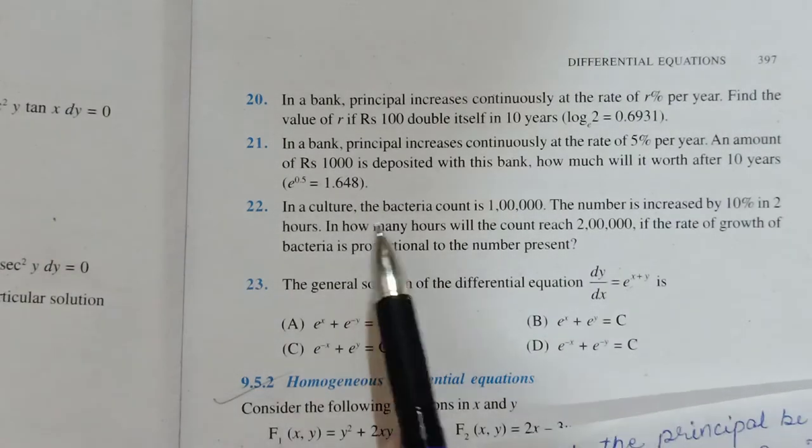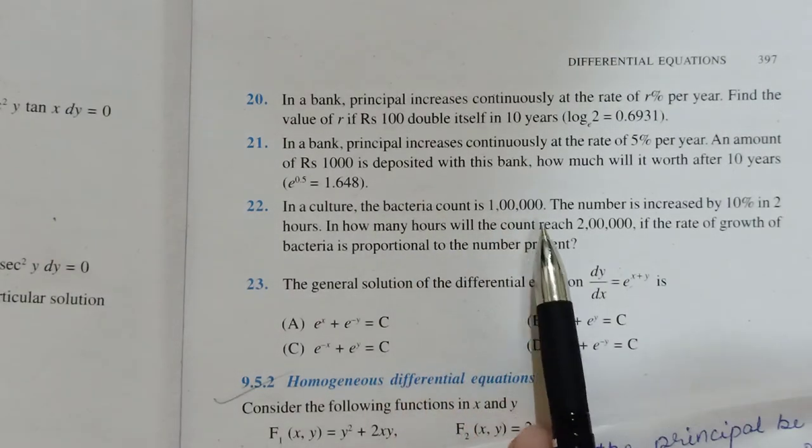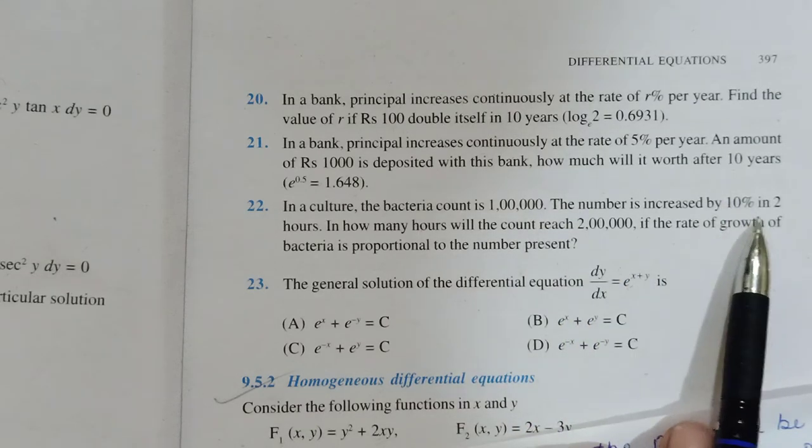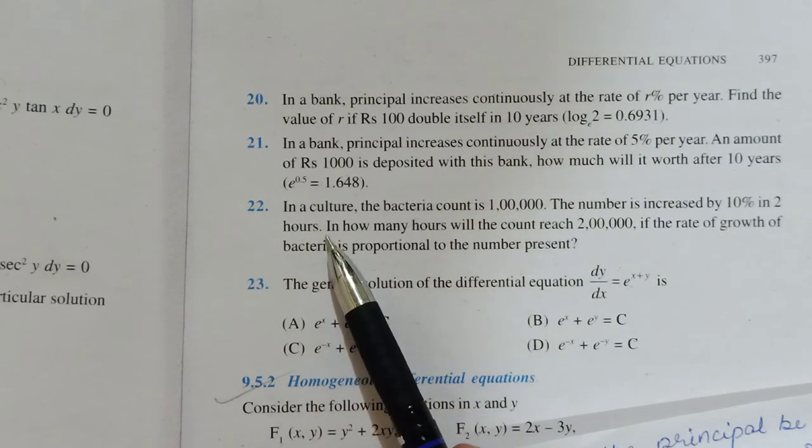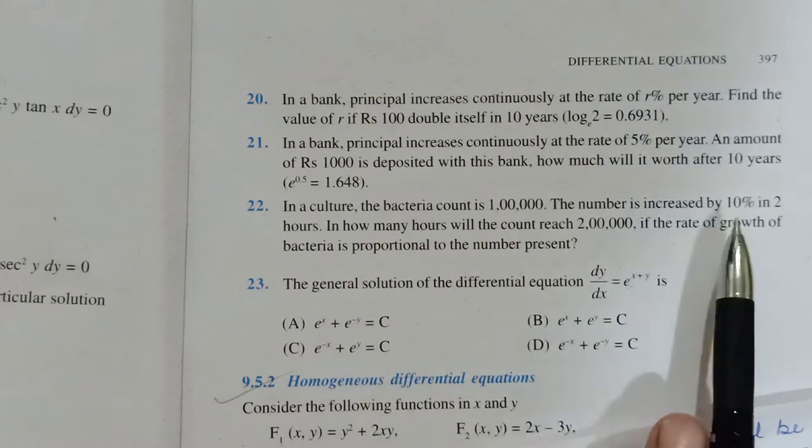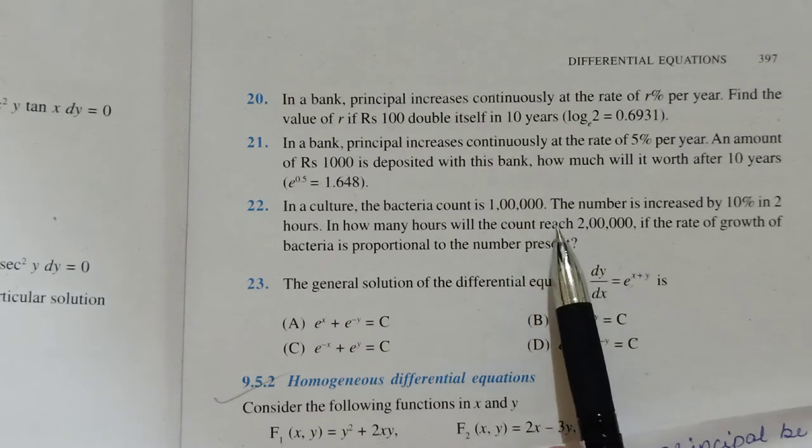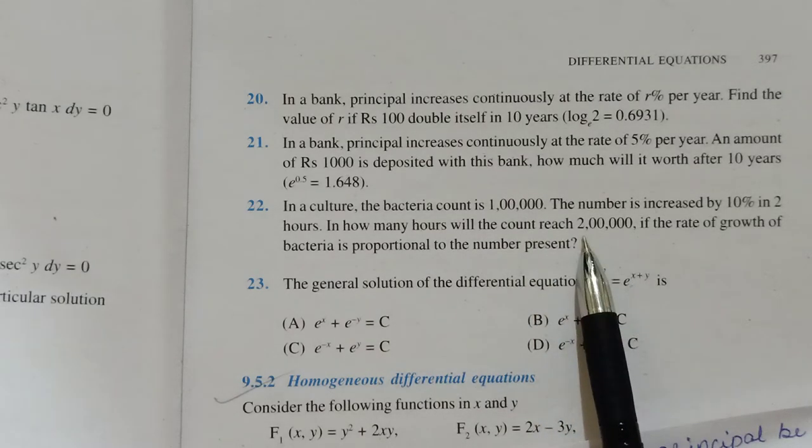22nd, there is a culture in which bacteria count is initially 1 lakh. The number is increased by 10% in every 2 hours. Okay, rate of increase here you have mentioned 10% fixed given.